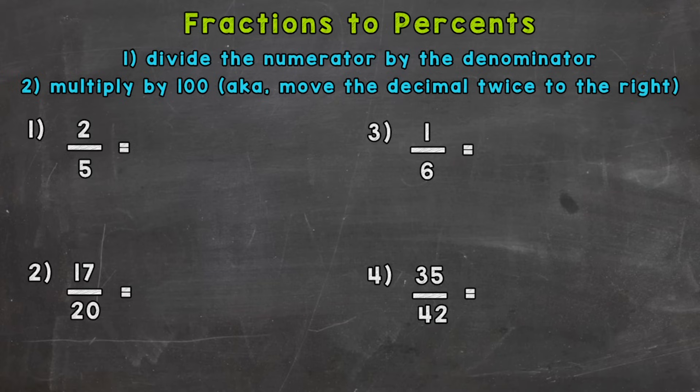So again here we have 2/5, so we need to divide the numerator or top number by the denominator. So 2 divided by 5. We cannot pull a whole group of 5 out of 2, so we need to extend with a decimal and a 0.